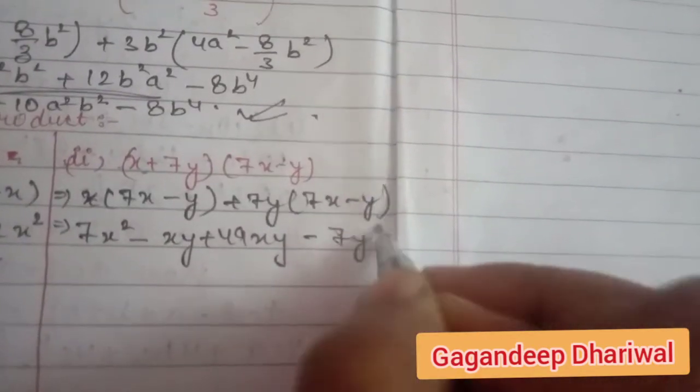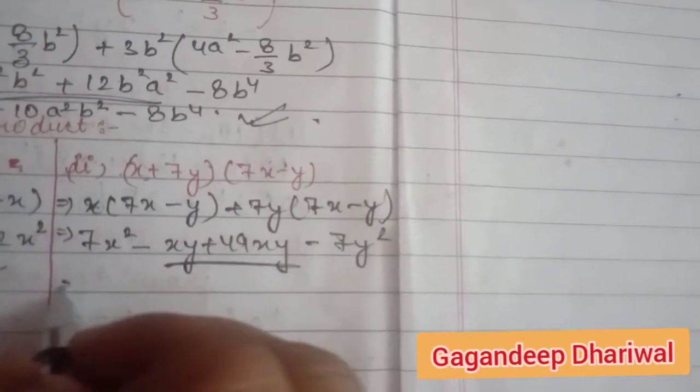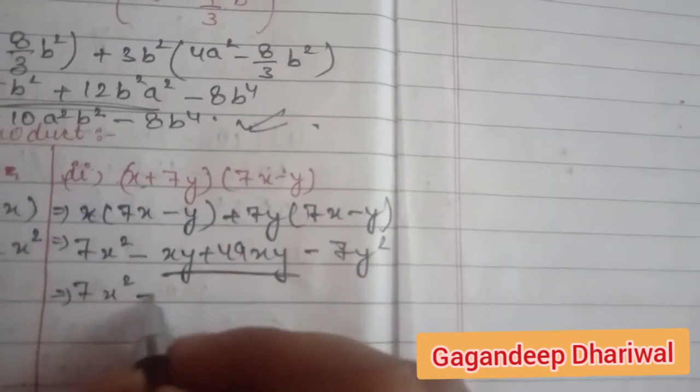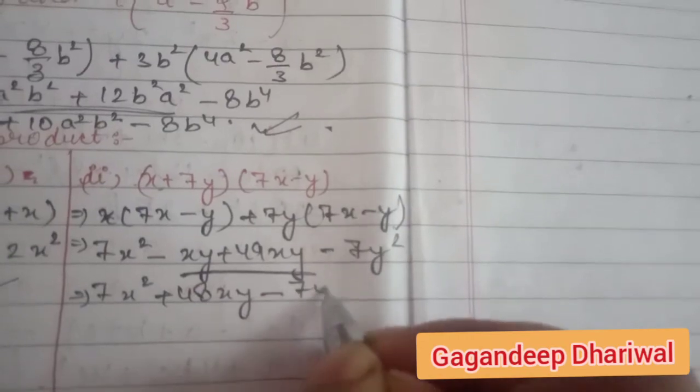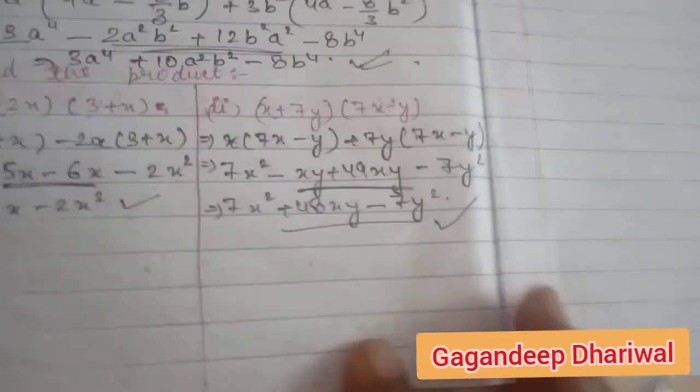The middle terms are like terms, so it is 7x squared plus 48xy minus 7y squared, and this is your answer.